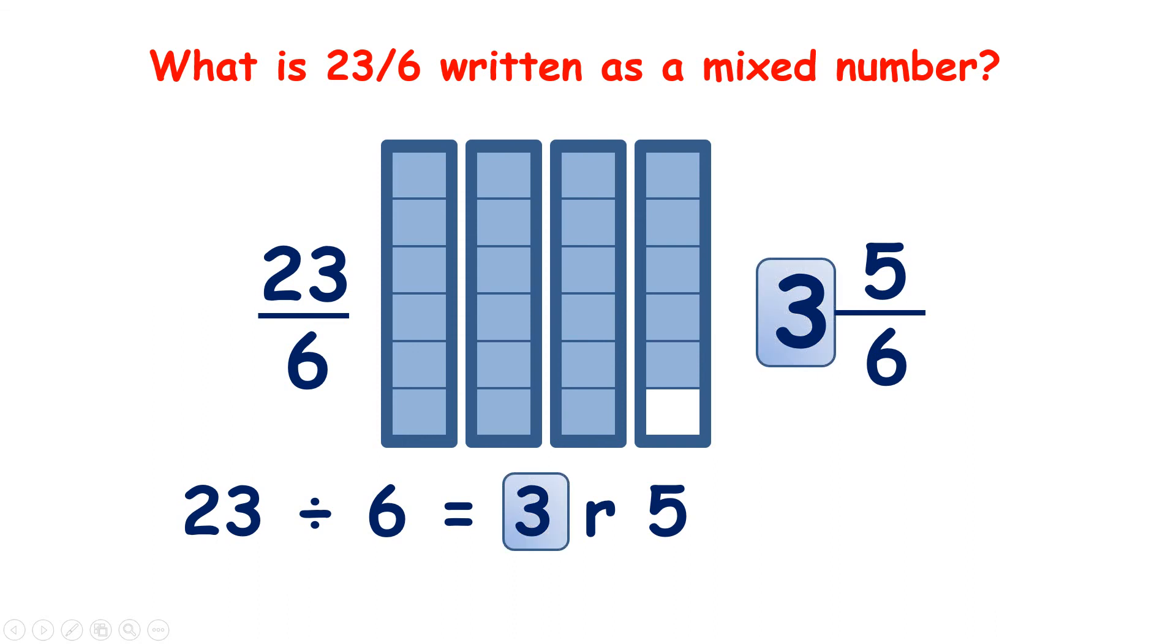And so, the whole number is the whole number in our mixed number, and then the remainder is the numerator of our mixed number, and the denominator stays the same.